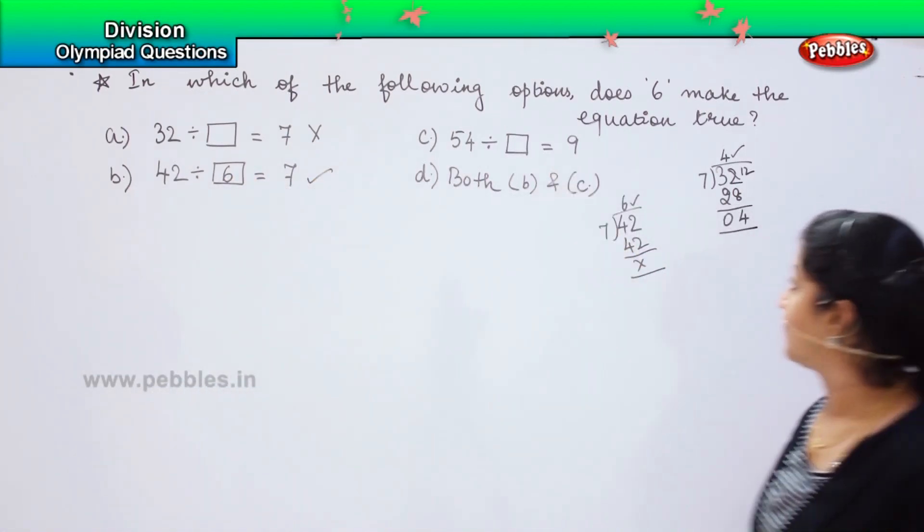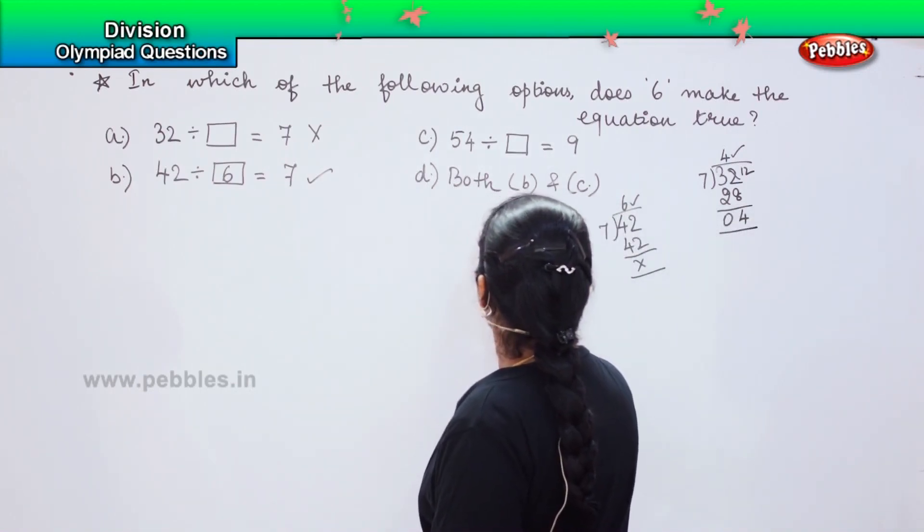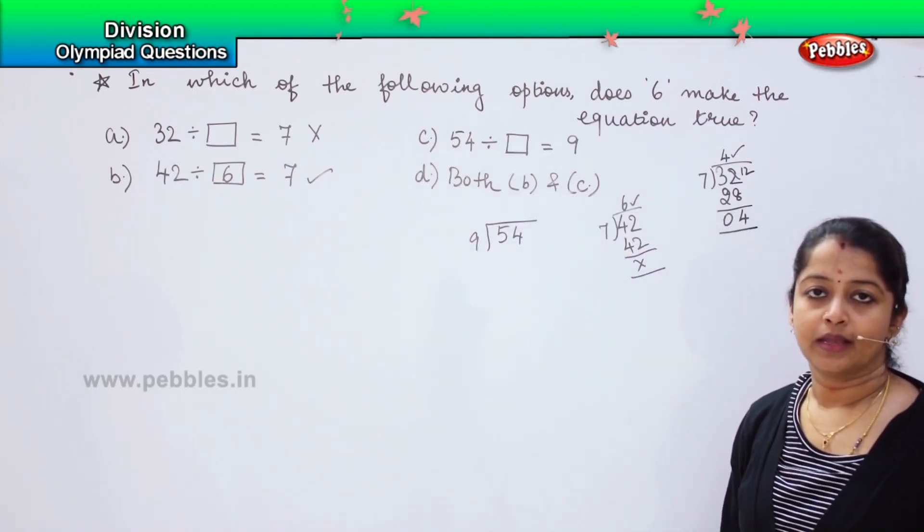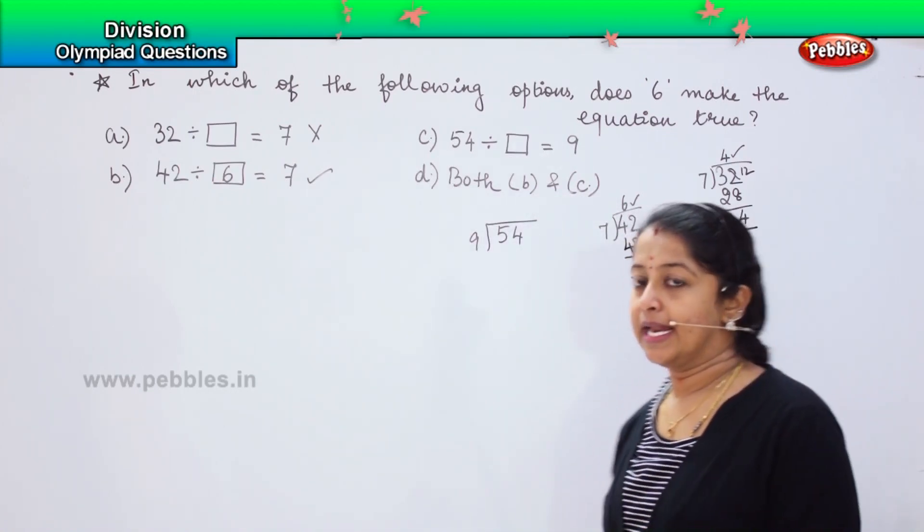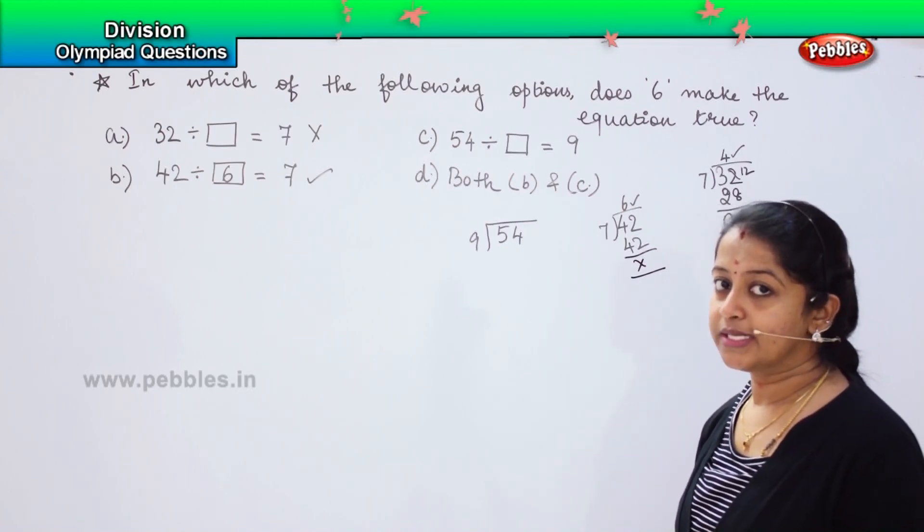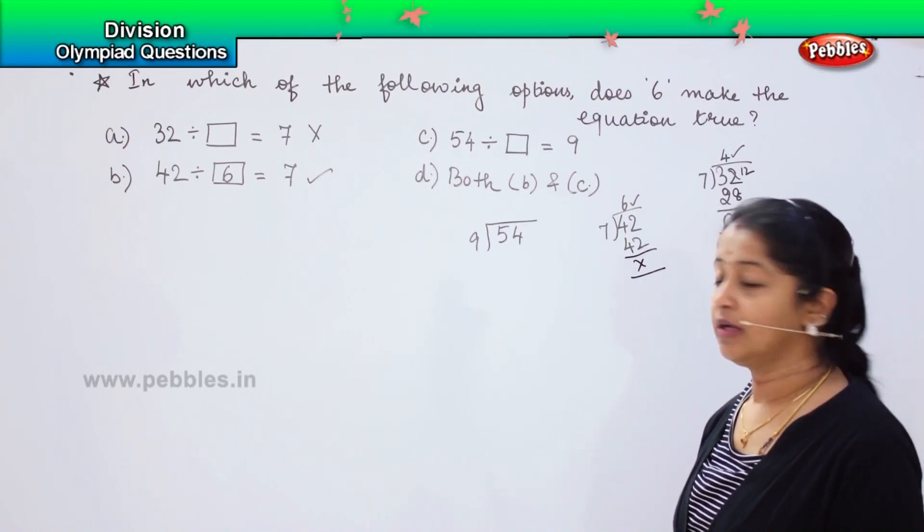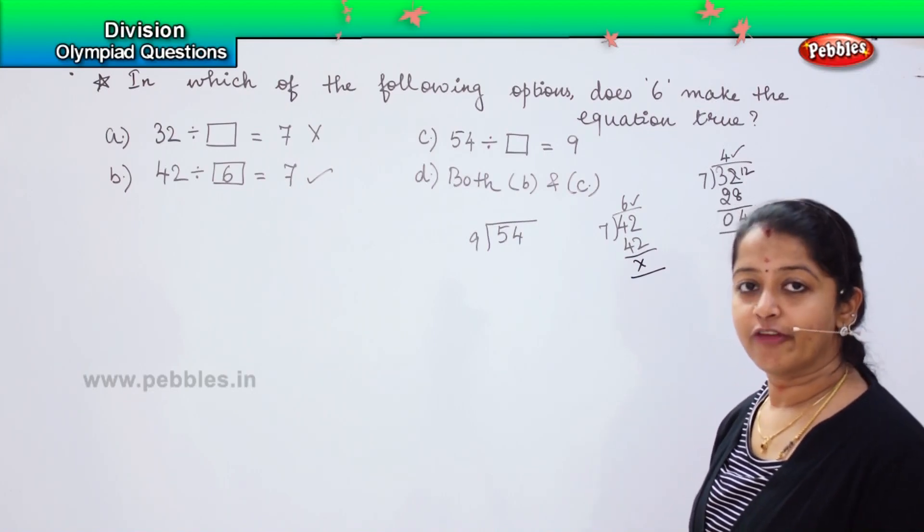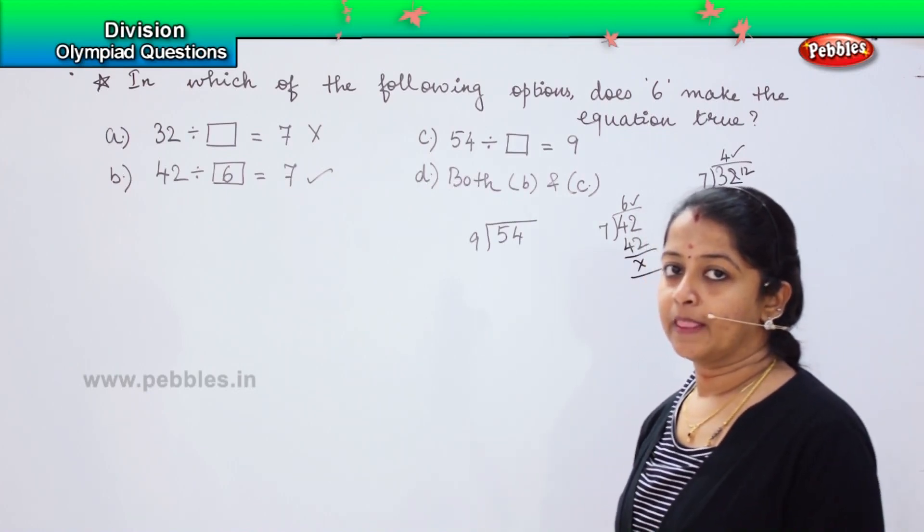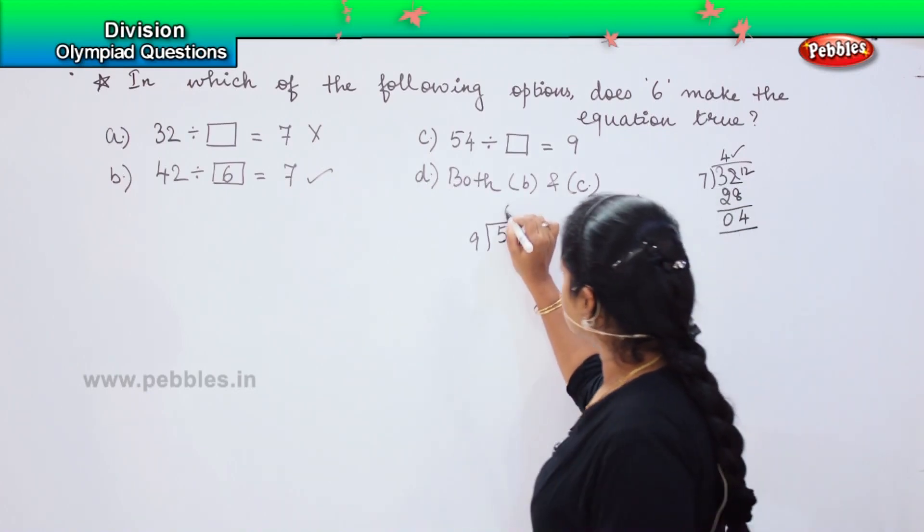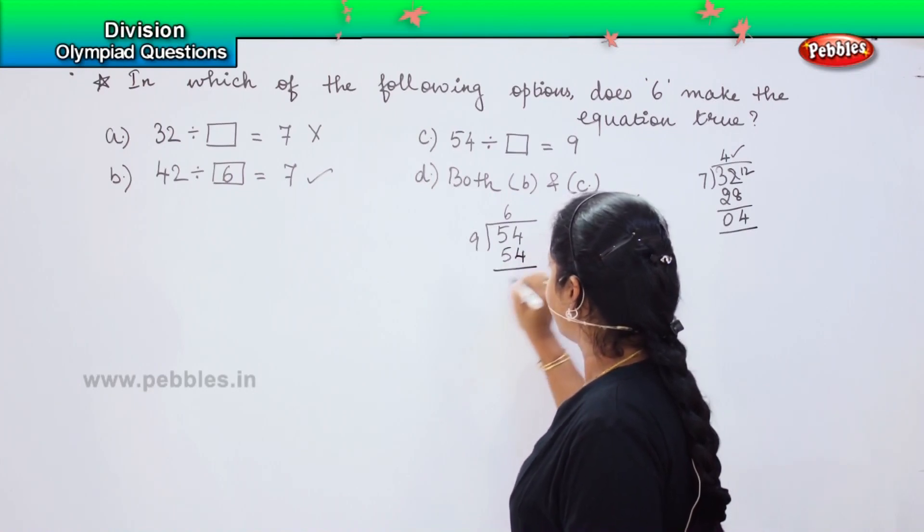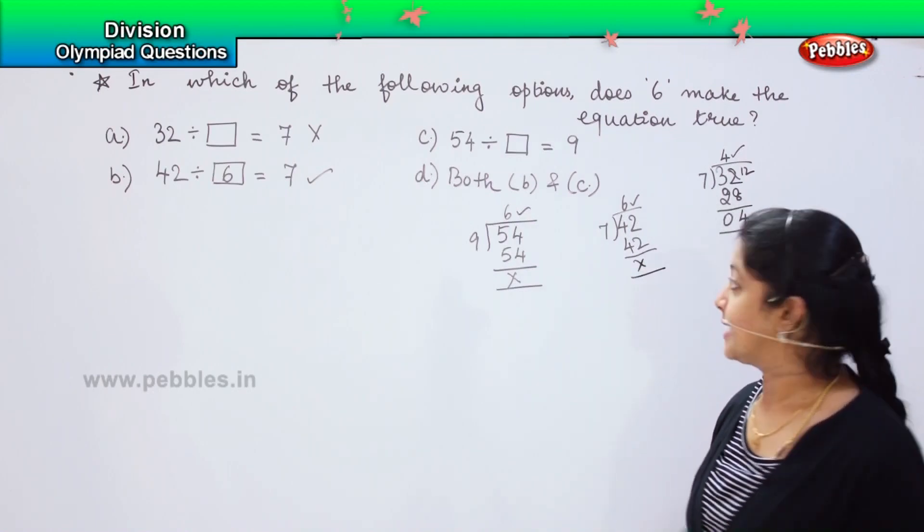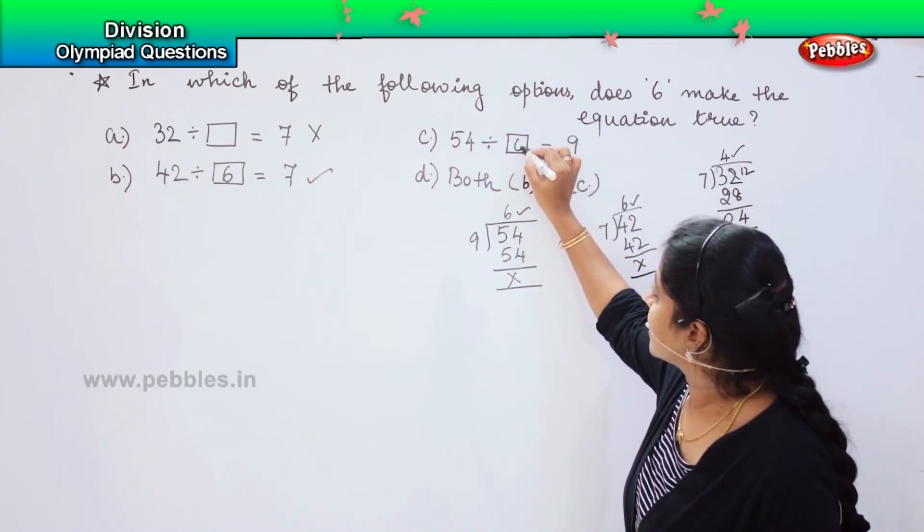Shall we try the next one? Yes. 54 divided by 9. Tell the table of 9. 9 1's are 9, 9 2's are 18, 9 3's are 27, 9 4's are 36, 9 5's are 45, 9 6's are yes, 54. 6 and here it becomes 54. Here also my quotient is 6. Here also it will stand true.